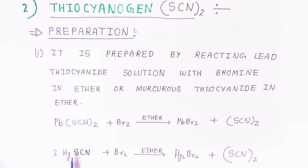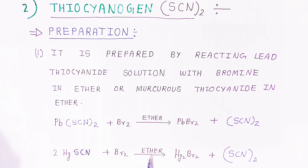Similarly, mercury thiocyanide in the presence of bromine and ether gives mercuric bromide and thiocyanogen.